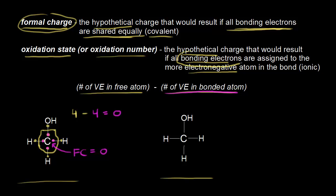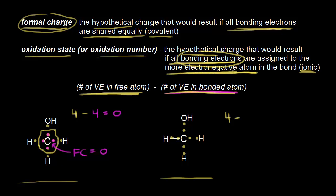We need to think about our bonding electrons again, so we put in the two electrons in each bond. For oxidation state, we need the number of valence electrons in the free atom — just like before, carbon is supposed to have four valence electrons, so this is a four. From that, we subtract the number of valence electrons carbon actually has in the drawing. This time we think about an ionic bond — we're going to pretend a covalent bond is ionic because we assign all bonding electrons to the more electronegative atom. There's no sharing here: winner takes all.